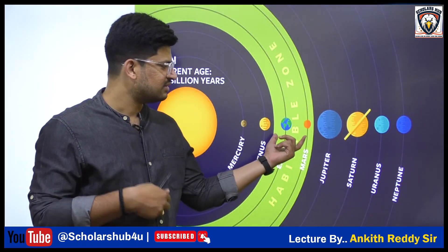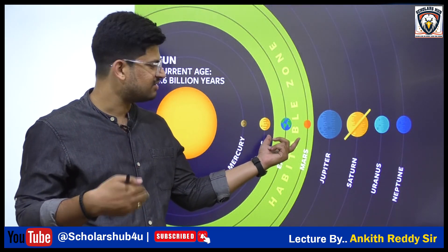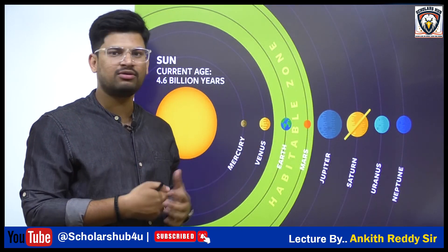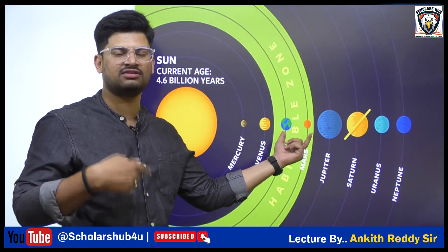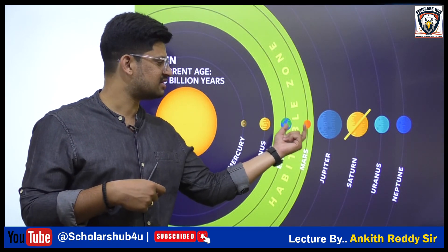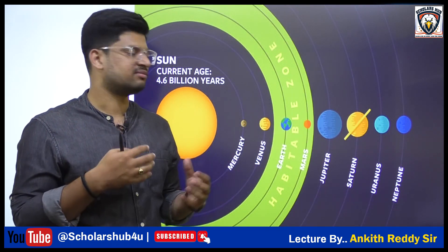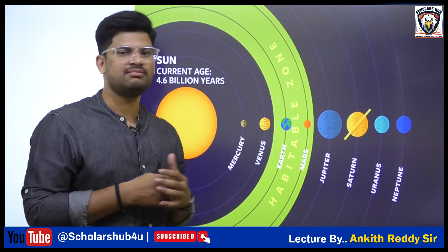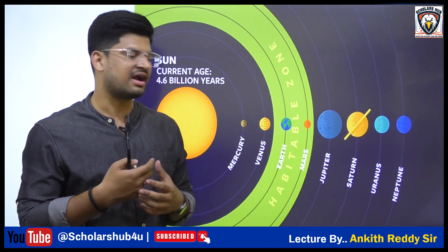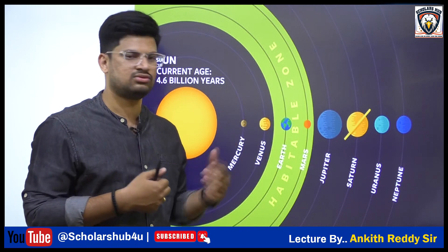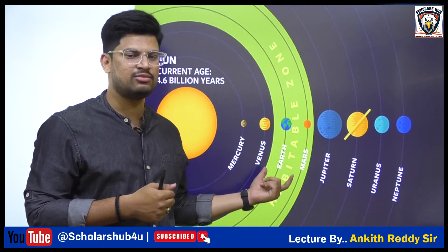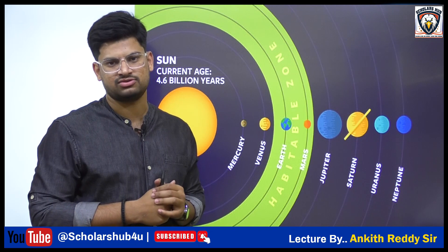It is no wonder that we are launching many satellites to understand Mars, because Mars also falls under this Goldilocks zone, and scientists believe that some kind of water may be existing on Mars. That's why from India we have also sent the satellite called Mangalyan to study about Mars, which is in the habitable zone, also called the Goldilocks zone.